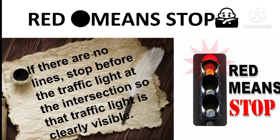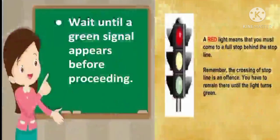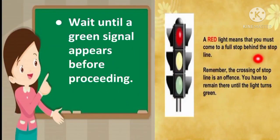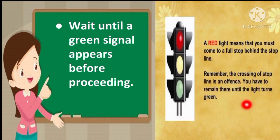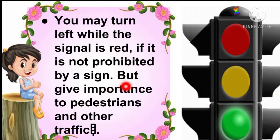Red means stop. If there are no lines, stop before the traffic light at the intersection so the traffic light is clearly visible. You have to wait until a green signal appears before proceeding. A red light means that you must come to a full stop behind the stop line. Remember, crossing the stop line is an offence — remain there until the light turns green. You may turn left while the signal is red if it is not prohibited by a sign, but give way to pedestrians and other traffic.